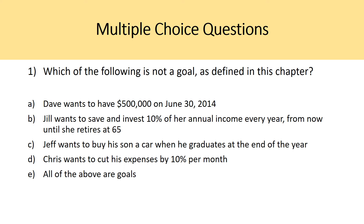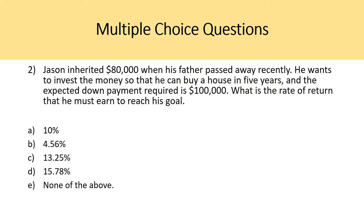That's pretty much it for this chapter — it's a relatively short chapter, so I have some multiple choice questions for you to work on. Answers are posted in the video description. Question one: which of the following is not a goal as defined in this chapter? That refers to the definition of a financial goal. Question two: Jason inherited $80,000 when his father passed away. He wants to invest the money to buy a house in five years, and the expected down payment required is $100,000. What is the rate of return he must earn to reach his goal?